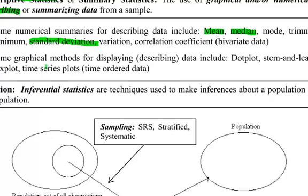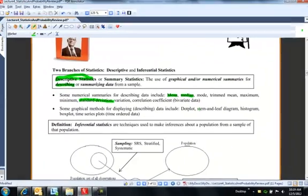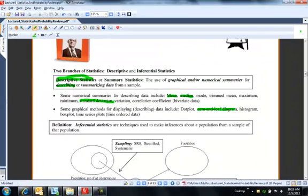So they're just numerical summaries of the data. They're called statistics. And we can also use graphs to do it, stem and leaf plots. You might not remember, but I'm sure you've seen histograms. We did box plots in 223.